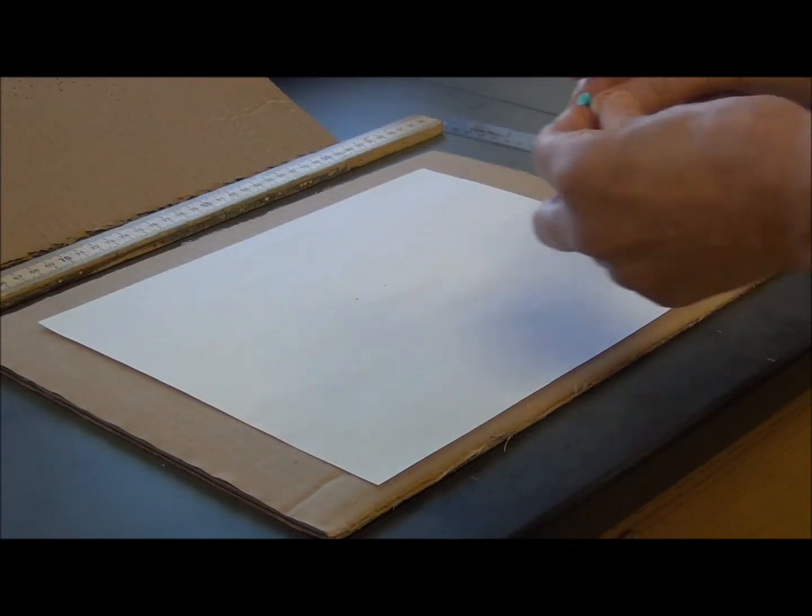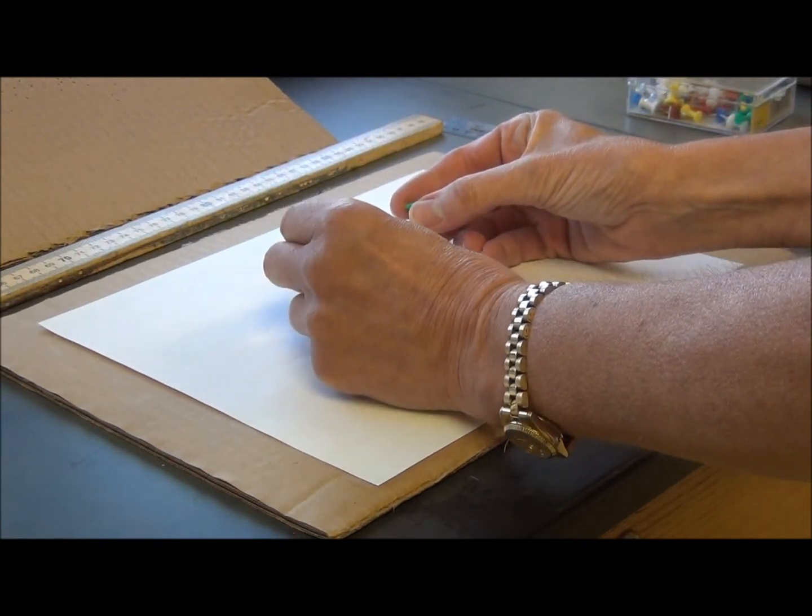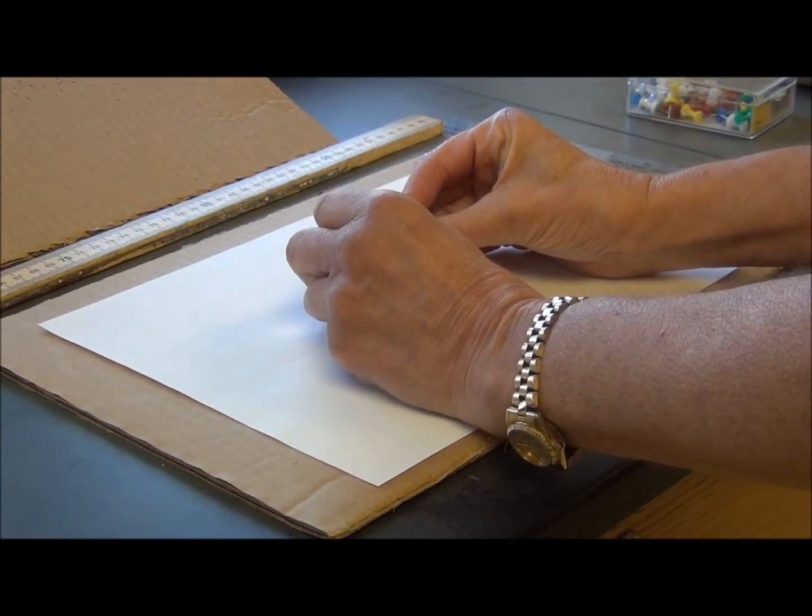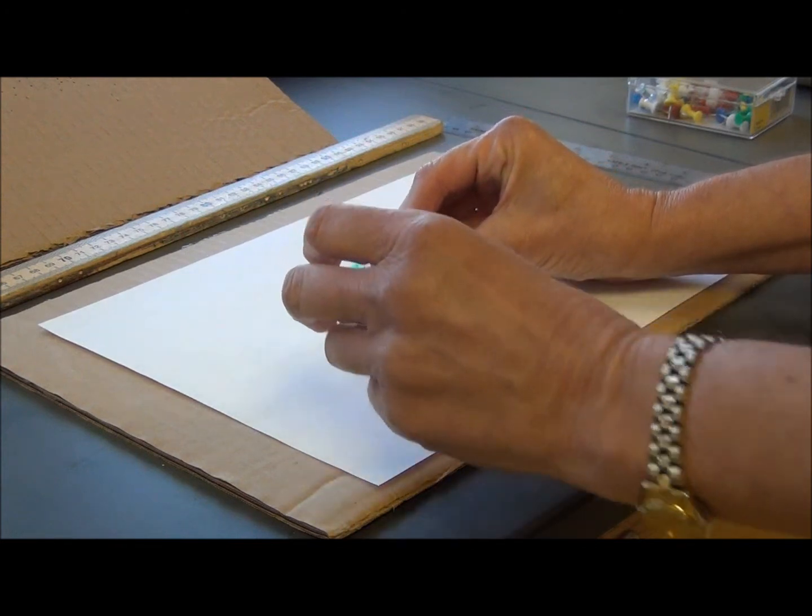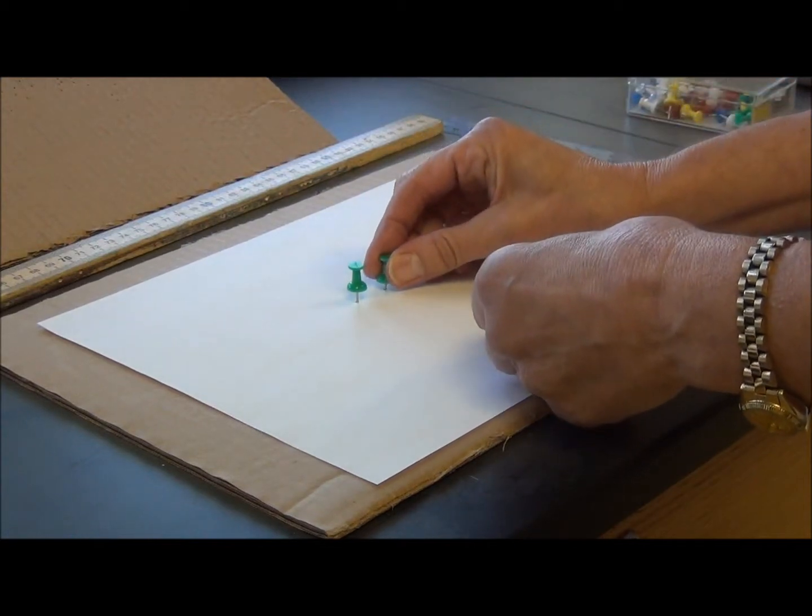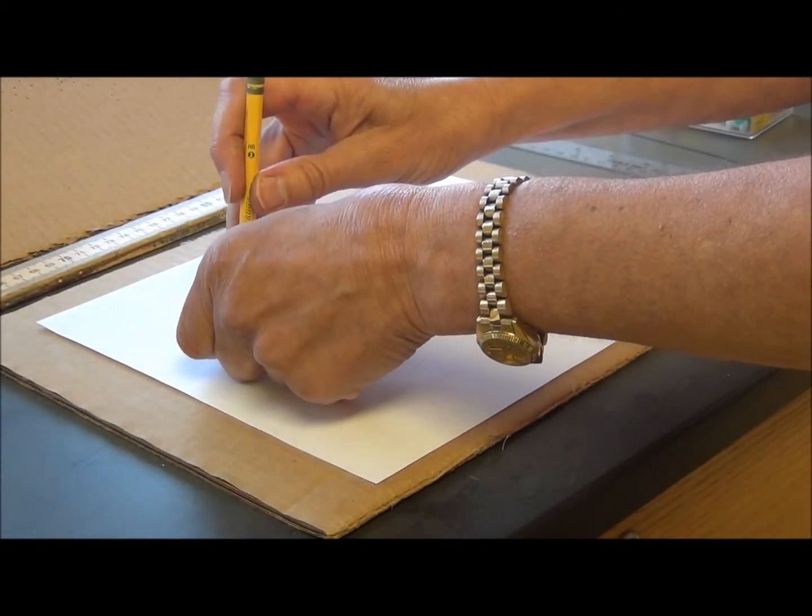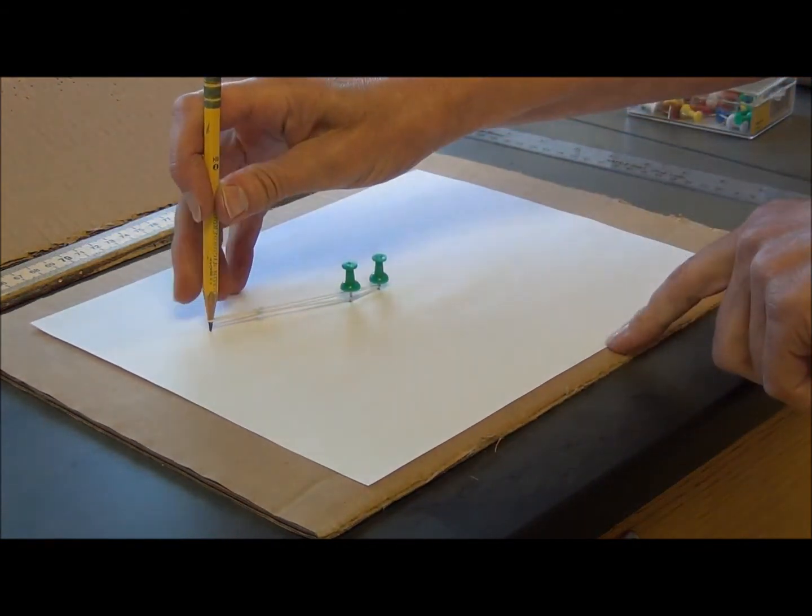Put the push pins into the paper where F and F' have been located. You're going to grab the string that we've already knotted together. Place this around your push pins. Stick in your pencil.